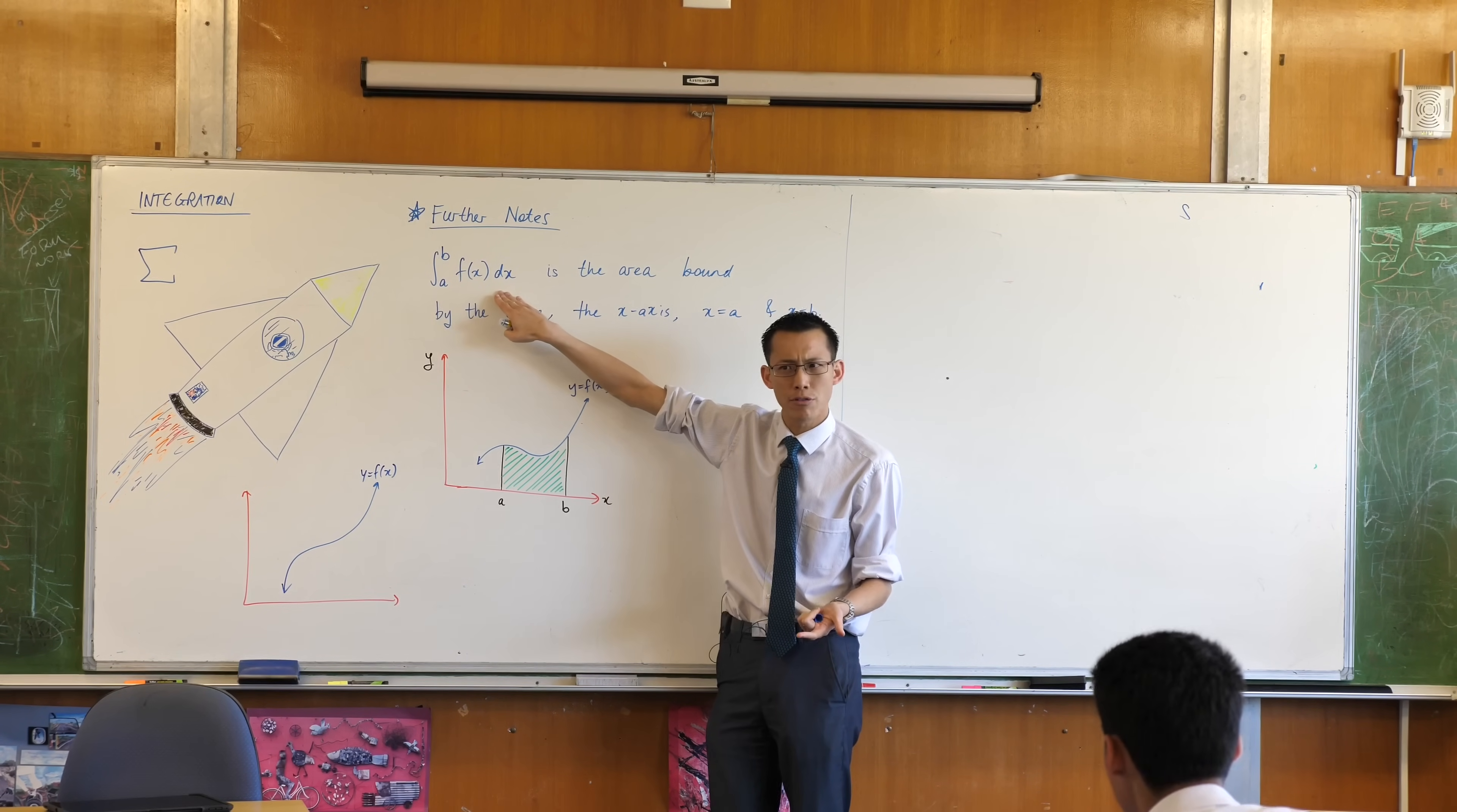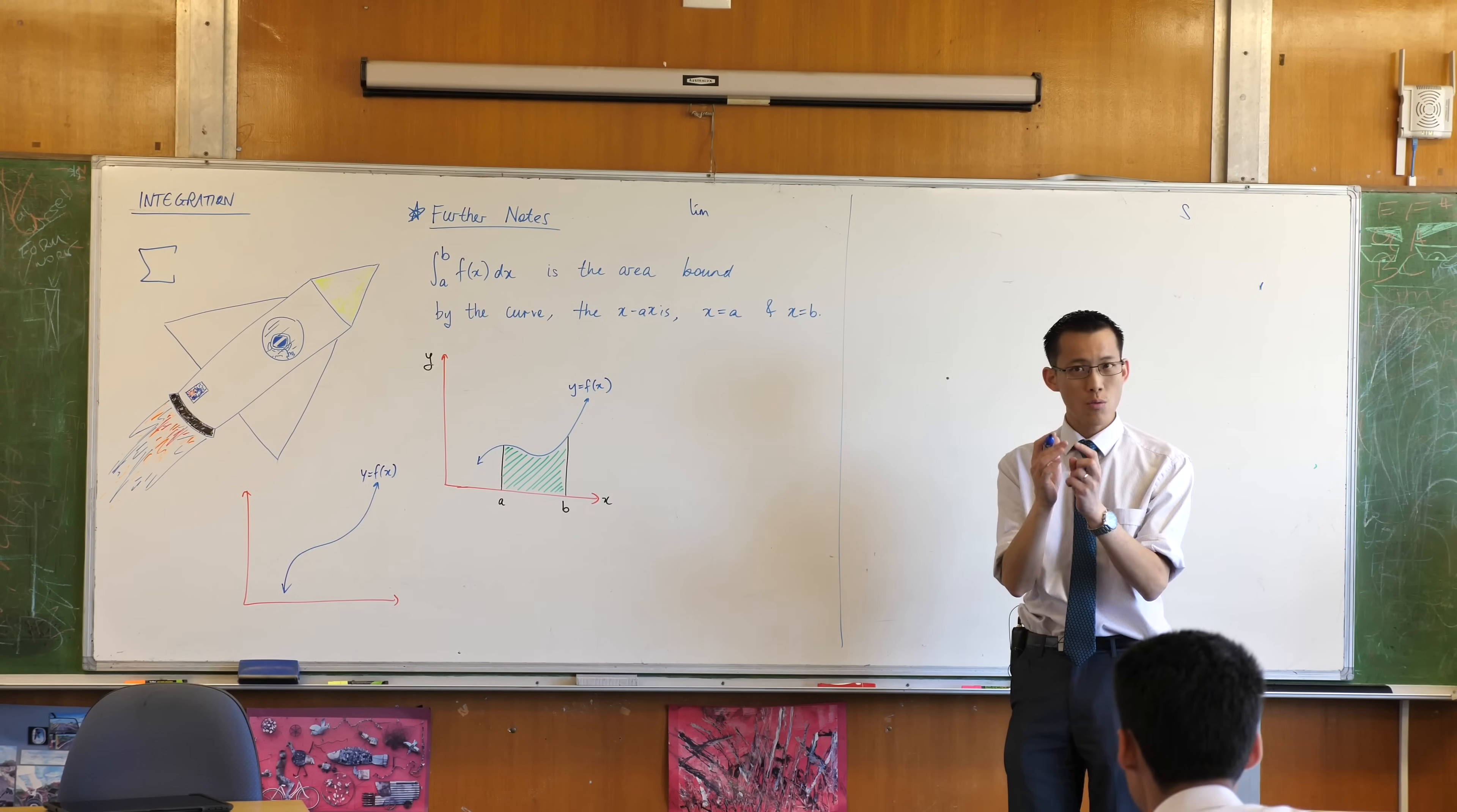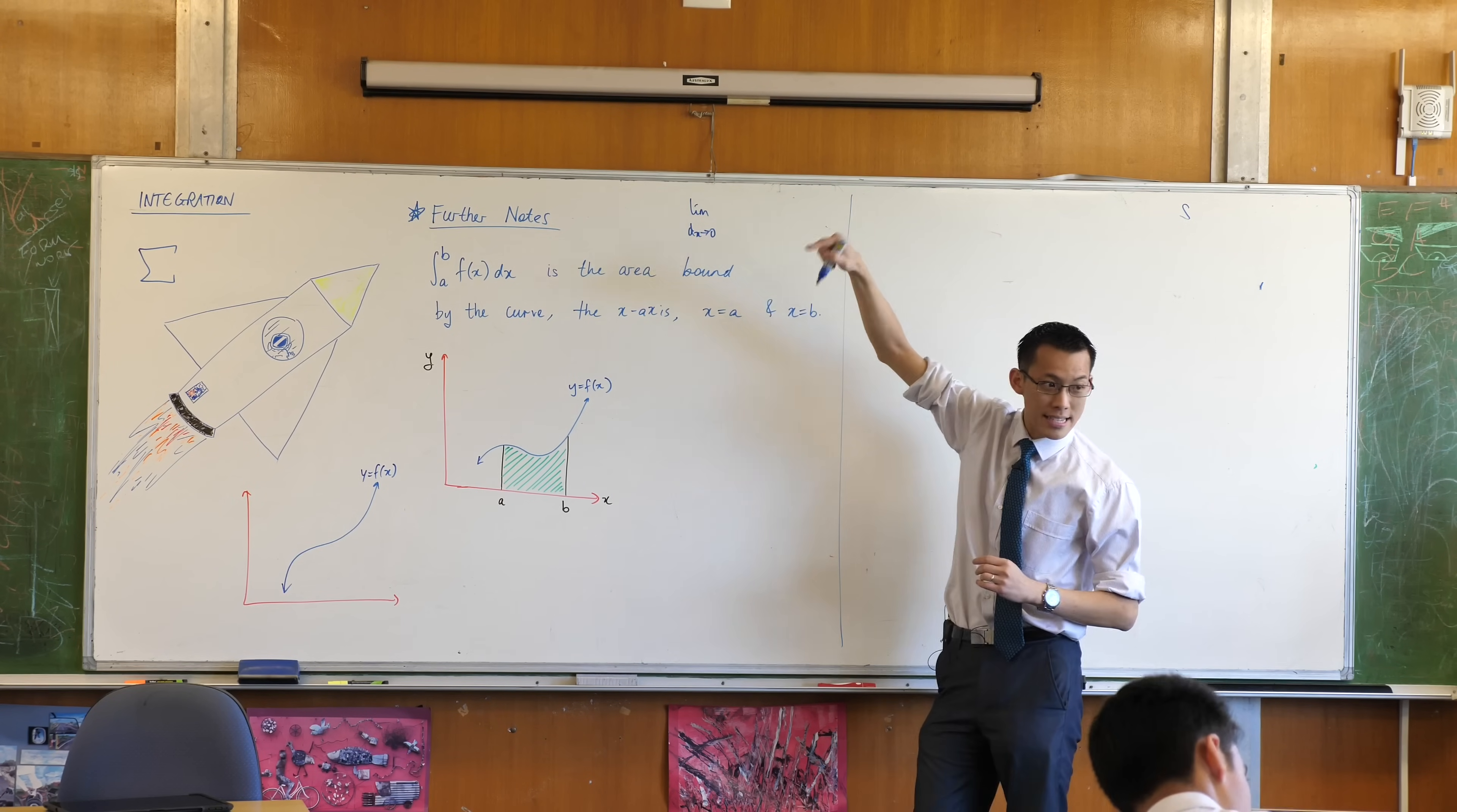Do you remember that when we were doing first principles? We would say the limit as, now we would say h approaches 0. Do you remember that? But h, what was h? It was the tiny little run. There's rise over run. So you could write it like this, as that approaches 0.